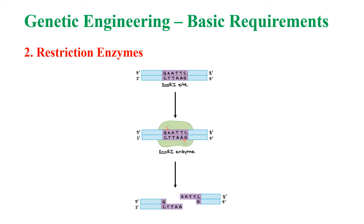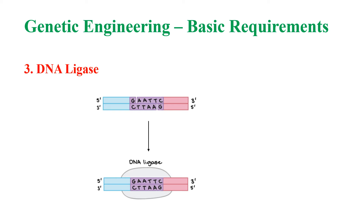Next is restriction enzymes. Restriction enzymes recognize a specific base pair sequence in DNA known as a restriction site, and cleave the phosphodiester bond within the DNA. ECO-R1 is a common restriction enzyme used in labs. This is the restriction site of ECO-R1. When ECO-R1 enzyme is added to the DNA, it recognizes and cuts this site and produces single-stranded DNA overhangs.